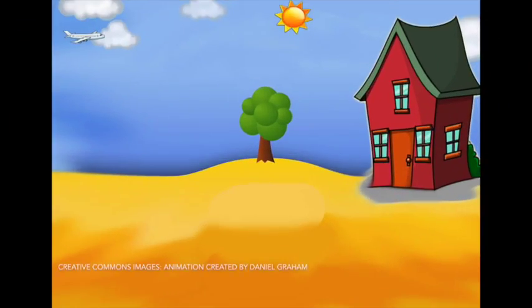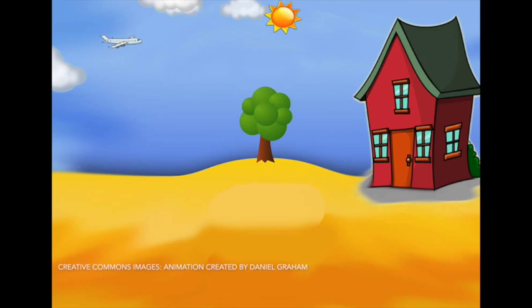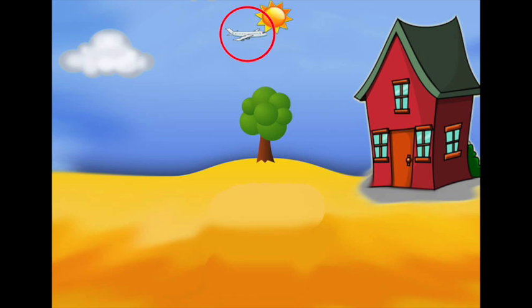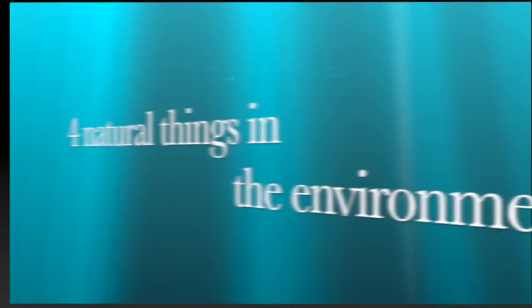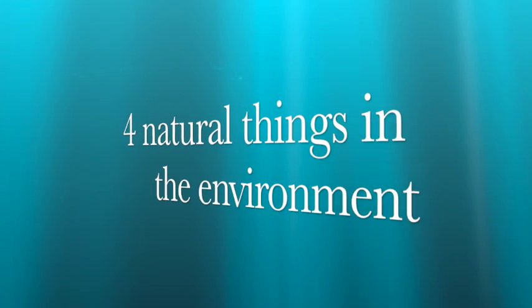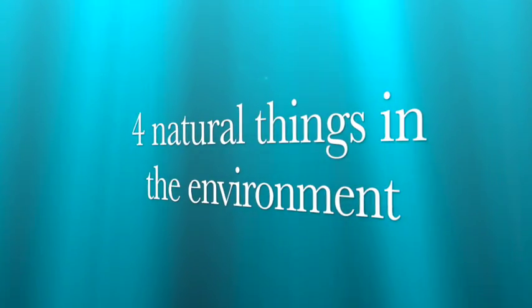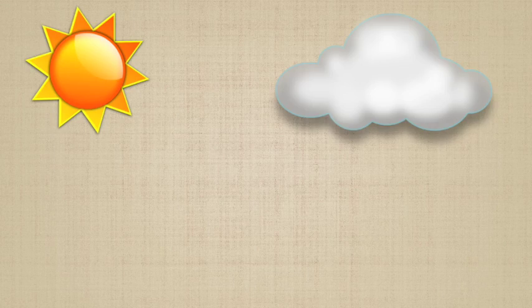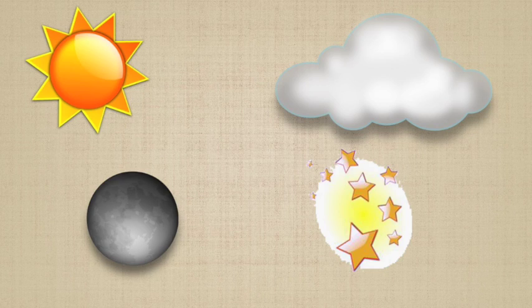Okay, let's see how you went. Something that you saw in the sky that was made by humans — that's right, it was an aeroplane. How about four things that were not made by humans that we see in the sky in the day or the night? Well, they were the sun, clouds, the moon, and the stars.